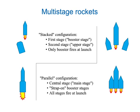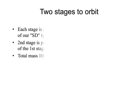Let's do a calculation showing that a multi-stage rocket can reach orbit even though individual stages don't have enough delta-V to do it alone. We'll have a rocket composed of two stages, each one of our SD-type rockets — 80% fuel, 10% structure, 10% payload. The payload of the first stage is actually the second stage, a small SD rocket. The total mass of both stages together is 100 units.